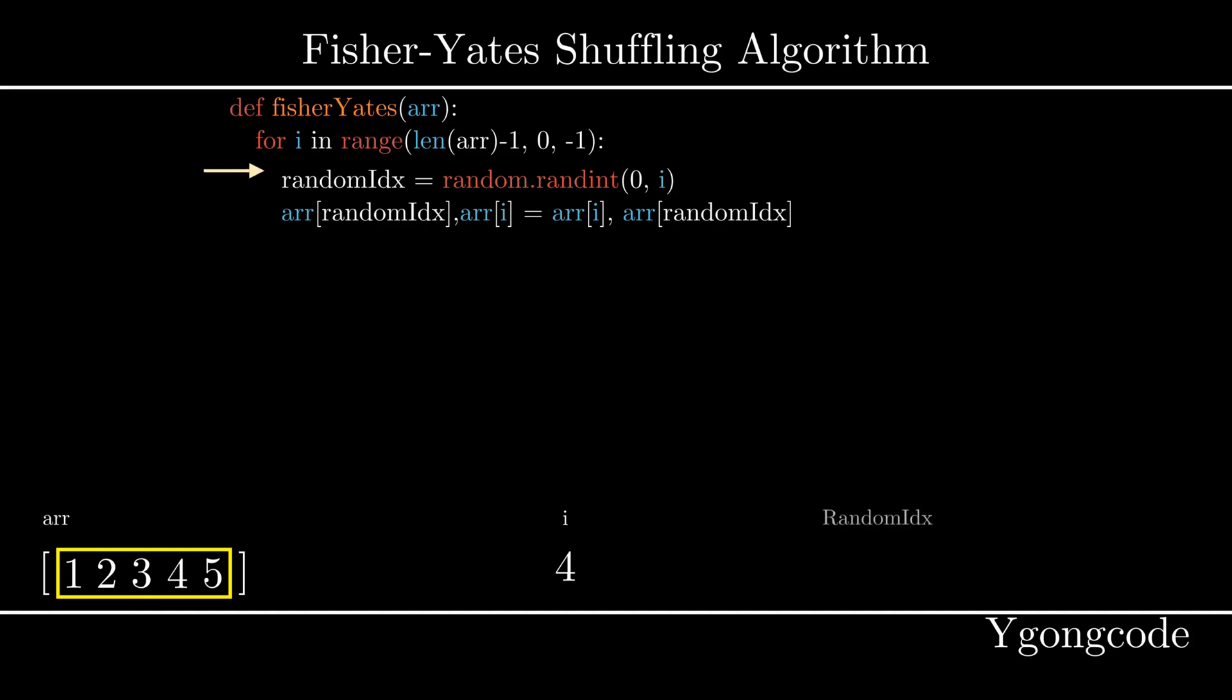In the first iteration, we will pick a random index between 0 and 4. In this case, we picked 3. So we will swap the fourth element with the fifth element, which is also the last element.